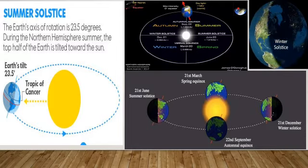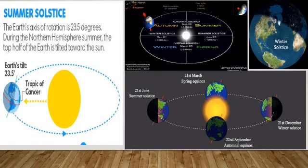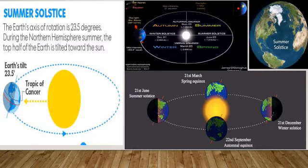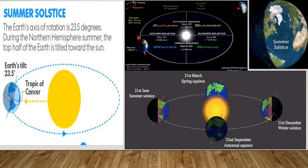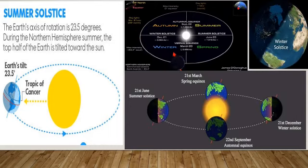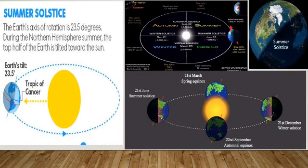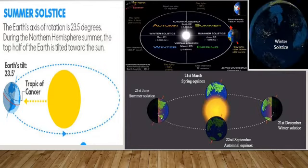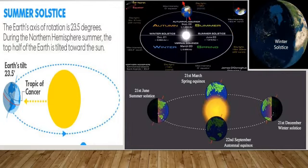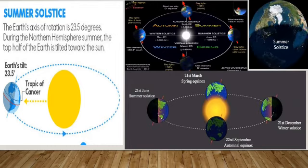The summer solstice occurs on 21 June when the north pole is inclined toward the sun. Northern hemisphere experiences summer season and southern hemisphere experiences winter season.